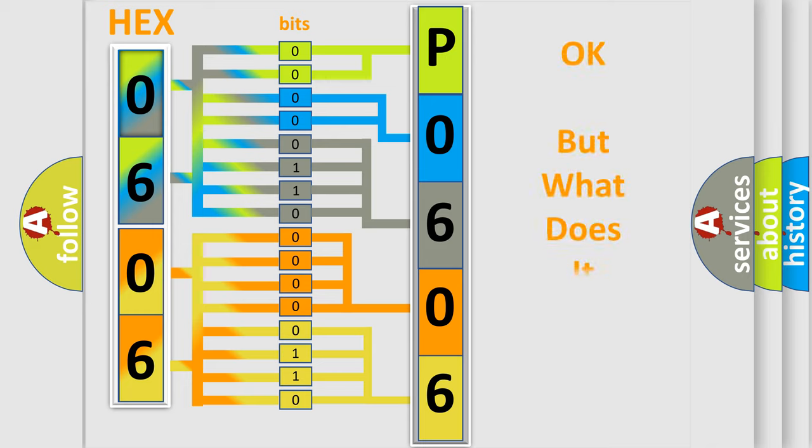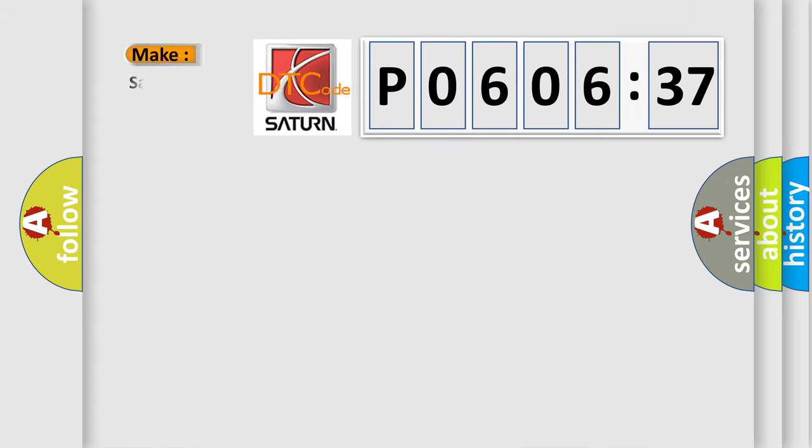We now know in what way the diagnostic tool translates the received information into a more comprehensible format. The number itself does not make sense to us if we cannot assign information about what it actually expresses. So, what does the diagnostic trouble code P060637 interpret specifically for Saturn car manufacturers?